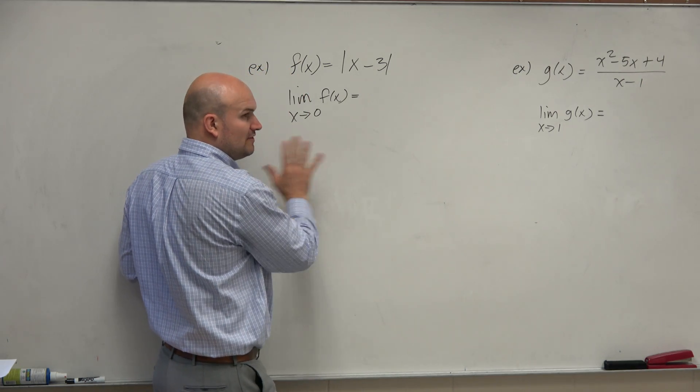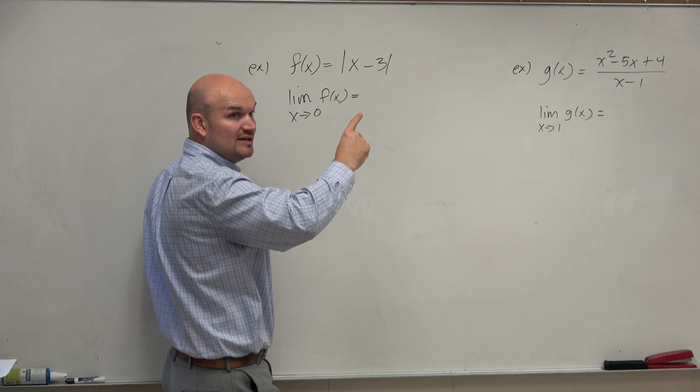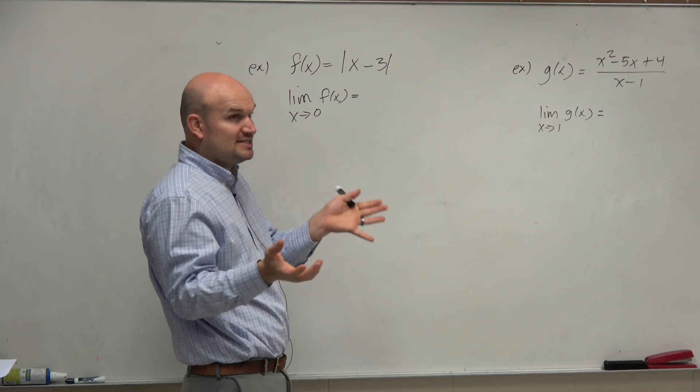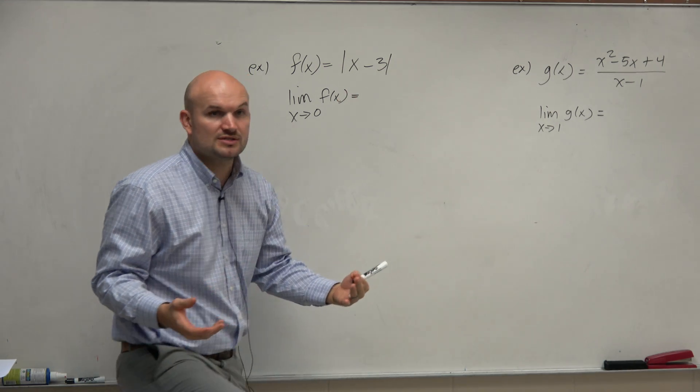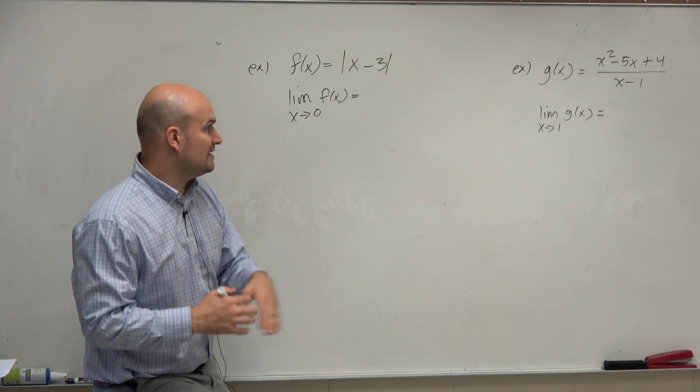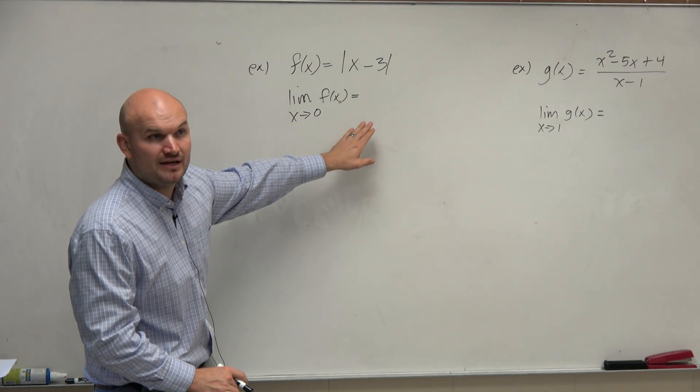Well, we look at the absolute value graph, and we know the absolute value graph is that v-shaped graph, right? It's continuous. There's no jump discontinuities, and at least in this example, there's no holes, right? So we know that this graph is continuous on all values. Don't you guys agree?